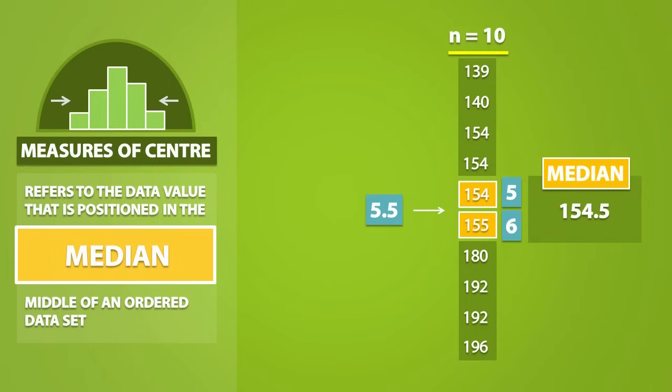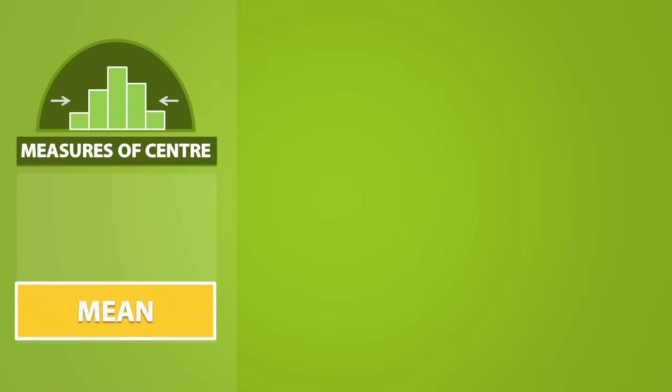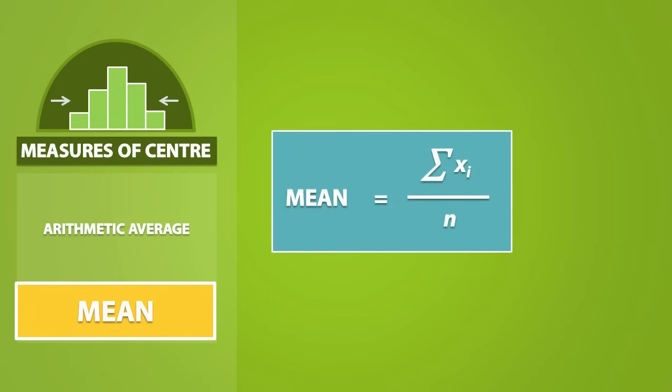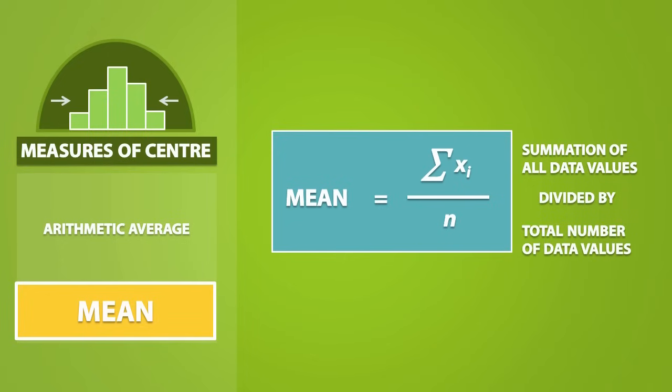The last measure of central tendency we will talk about is the mean. The mean is just another name for the arithmetic average. The formula of the mean is as follows: it is equal to the summation of all data values divided by the total number of data values. If our mean comes from a sample, we call it x-bar.